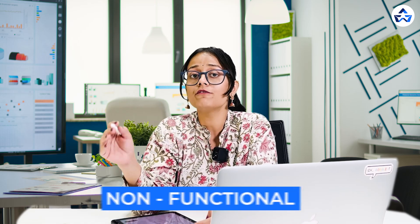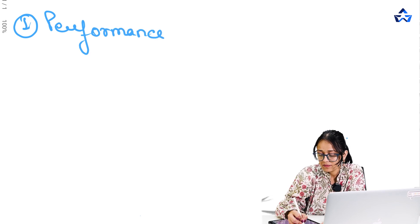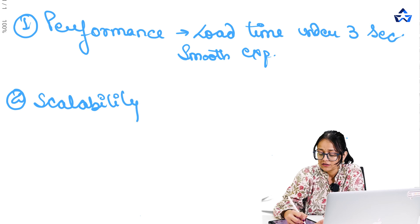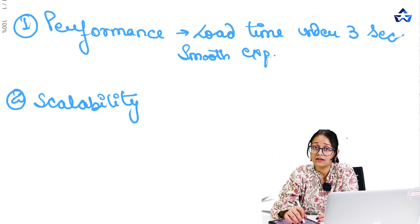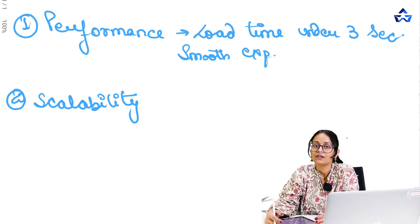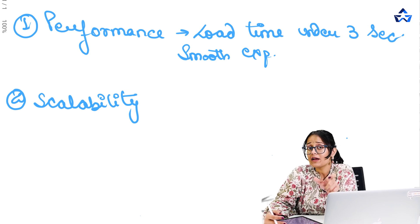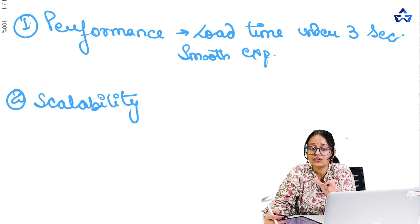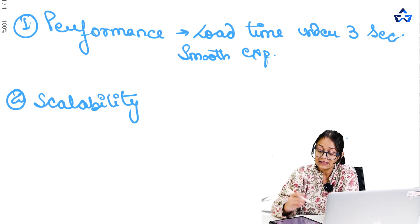Continuing with the food delivery app example, let's consider the non-functional requirements. Number one is performance. For an app like Zomato or Swiggy, the load time of the app should be under three seconds so that the user experiences a smooth interaction from the first point of contact.